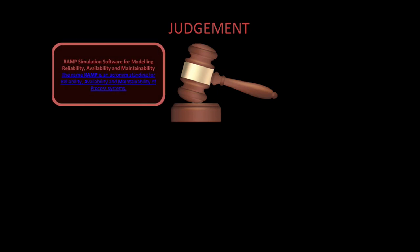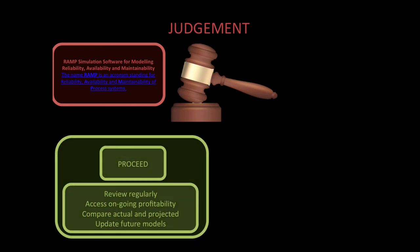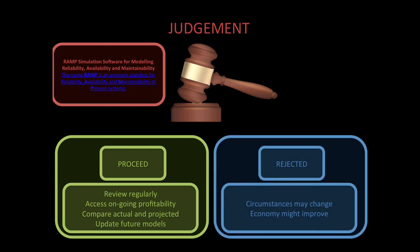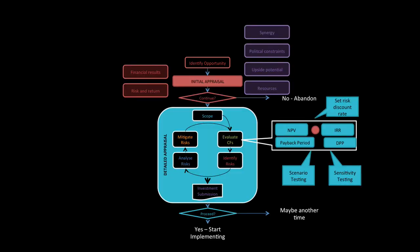Yeah, all in all, there's another thing known as RAMP, which is reliability, availability, and maintainability process. Some system you can use, like a model. You can either proceed after your judgments. Review regularly, assess ongoing profitability, compare actual and projected, update for future models. Or if you say no, circumstances might change in the future, the economy might improve. So don't throw it away, put it in a box, come back to that. I think Google does that a lot. Cool, cheers. Finally, that's what the whole picture looks like.